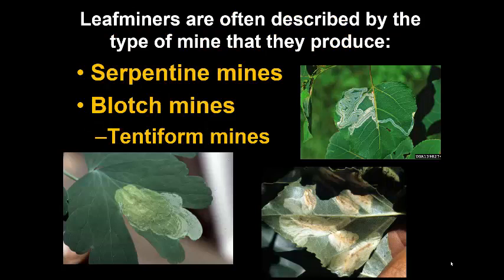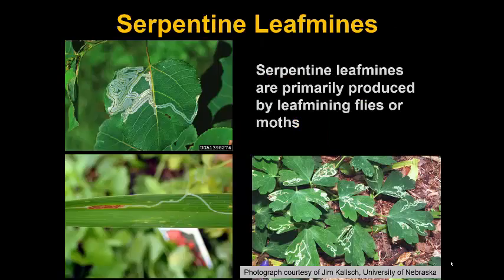Leaf miners are often described by the type of mine they produce. The three main groups would be a serpentine mine, a blotch mine, and a tentiform mine. Serpentine mines meander through the leaf. They are quite small at the point where the egg is laid and gradually increase in diameter, ultimately with the insect pupating at the end or dropping to the ground to pupate in the soil.